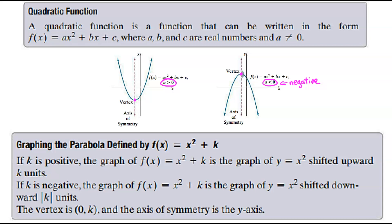We're going to start out graphing parabolas defined by f of x equals x squared plus k. If k is positive, then the graph is going to shift upward. If k is negative, then it's going to shift downward. Notice we're comparing to y equals x squared — our common graph, our standard graph, our parent graph. The vertex is always at (0, k), and the axis of symmetry is the y-axis, so x equals zero.